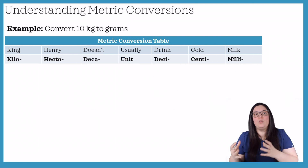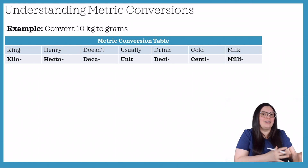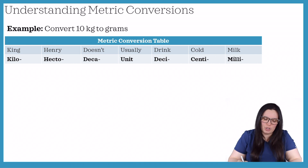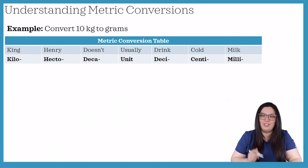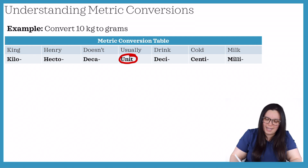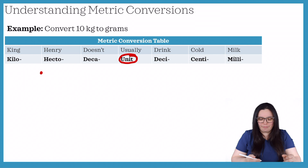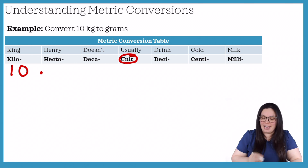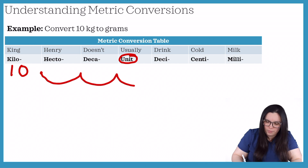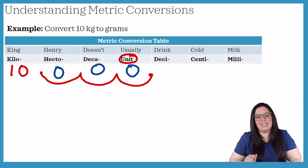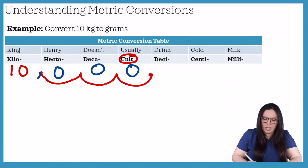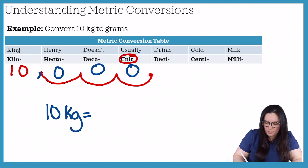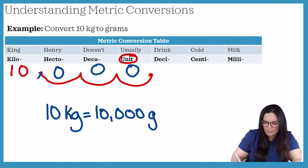For the last couple of questions we've been moving from right to left, but in this question we're going to be moving from left to right. It's asking us to convert 10 kilograms to grams. Grams is our unit of measure, so we place our decimal point to the right of our starting column — kilograms — giving us 10. We move the decimal place three spots to the right-hand side of our units column, adding zeros in the hecto, deca, and units spots. So 10 kilograms is equal to 10,000 grams.